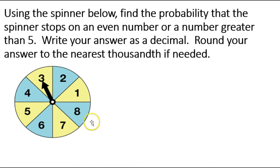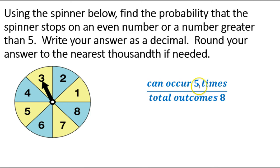So we're going to have 5 desired divided by the total number available, which is 8. So it can occur 5 different times over the total number of outcomes, which is 8.